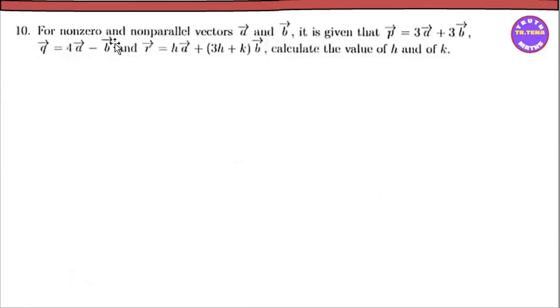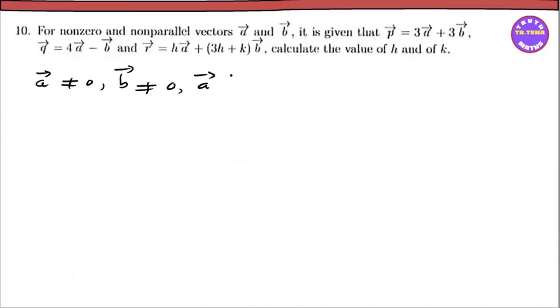Number 10. For non-zero and non-parallel vectors, we can write a vector not equal to zero, b vector not equal to zero, and a vector and b vector are non-parallel. Being given that the vectors are P, Q, R.